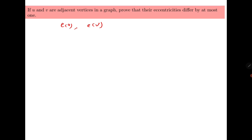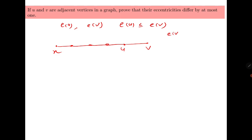Let the eccentricities of u and v be denoted as e(u) and e(v), and assume e(u) ≤ e(v). Consider any arbitrary vertex x in the graph. There must be a path from x to u and x to v, and v is adjacent to u. We need to prove that e(v) − e(u) ≤ 1, since they differ by at most one.